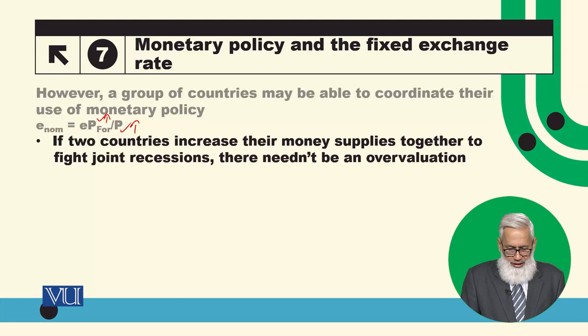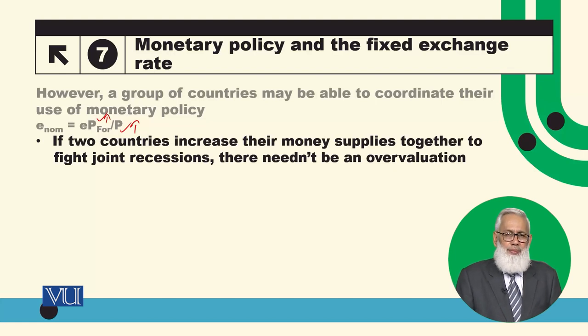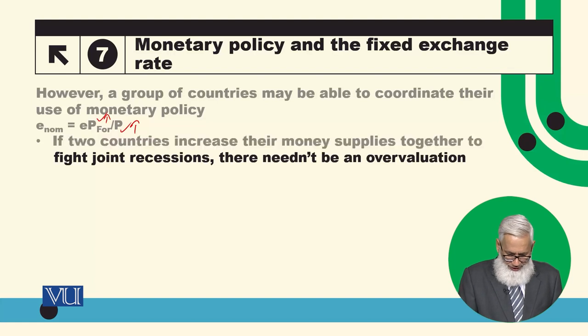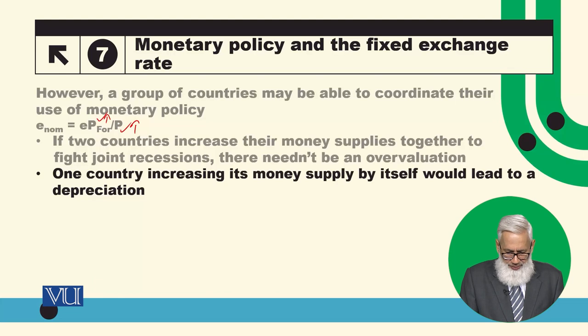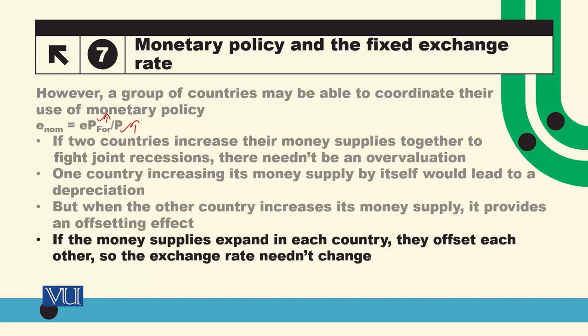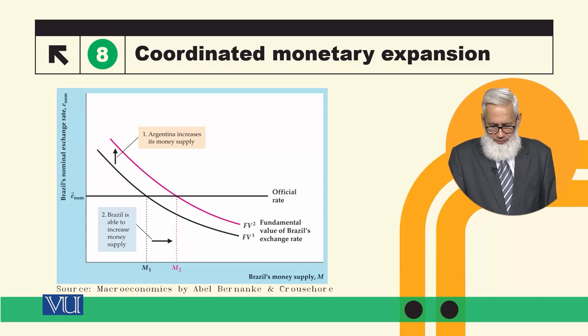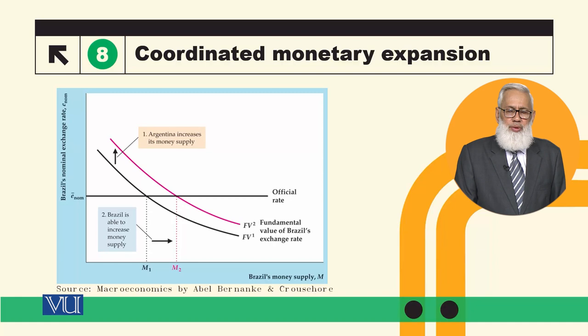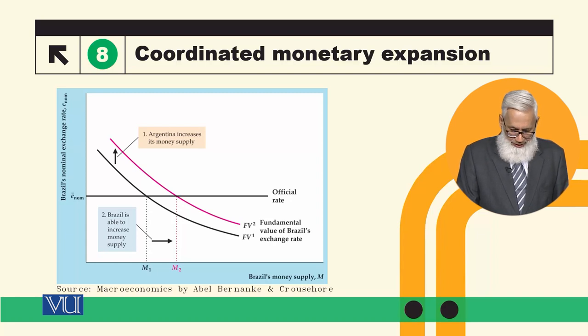So if two countries increase their money supplies together to fight a joint recession, there need not be an overvaluation. One country increasing its money supply by itself would lead to depreciation, but when the other country also increases its money supply, it provides an offsetting effect. If money supplies expand in each country, they offset each other and the exchange rate need not change. Coordinated monetary expansion allows monetary policy to be used to deal with recession.